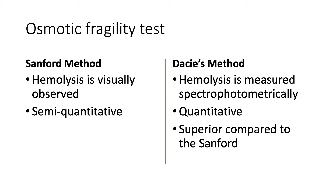The osmotic fragility test can be performed in two ways. The first is the Sanford method, in which hemolysis is visually observed — this is a semi-quantitative way to measure osmotic fragility. We also have the DASIS method, in which hemolysis is measured using a spectrophotometer, and this is a quantitative way to measure osmotic fragility.